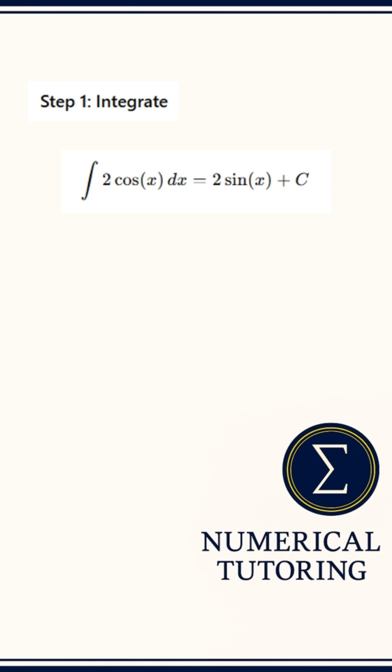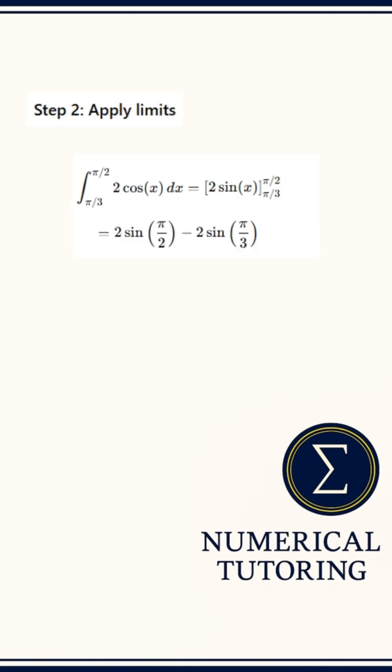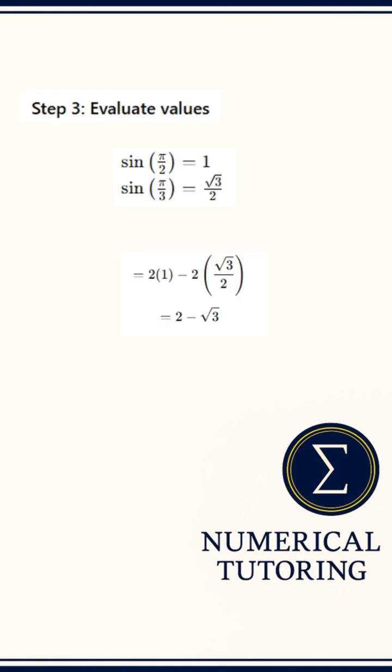The integral of 2 cosine x is 2 sine x. Step 2: Apply the limits. That's 2 sine of π over 2 minus 2 sine of π over 3. Step 3: Substitute values. Sine of π over 2 is 1.